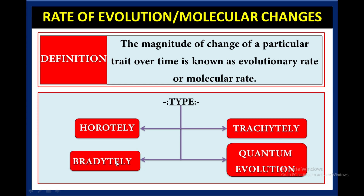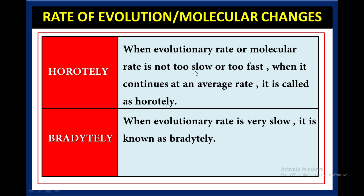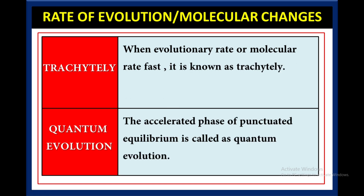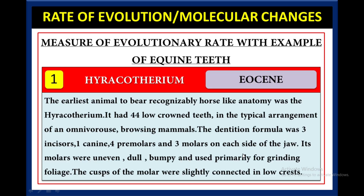The four types are horotelli, tachytele, bradytele, and quantum evolution. When evolutionary rate continues at an average rate, it is called horotelli. When evolutionary rate is very slow, it is known as bradytele. When evolutionary rate or molecular rate is very fast, it is known as tachytele. The accelerated phase of punctuated equilibrium is called quantum evolution.